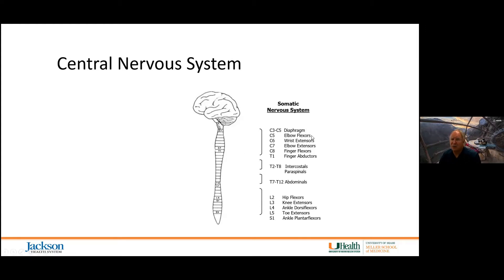A high spinal cord injury, for example just below C5, would allow some use of the elbow flexors but nothing below that.